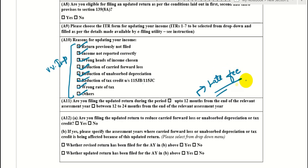According to the filing period, a late fee applies. If you file within 12 months from the end of the relevant assessment year, the amount is a little less. I have linked a video about the budget provisions using the I button, and it is also in the description.